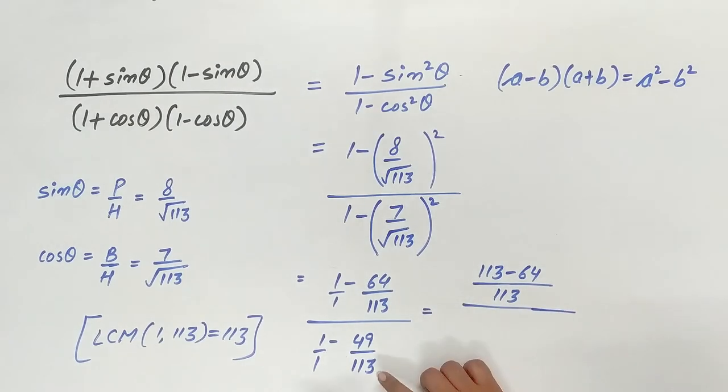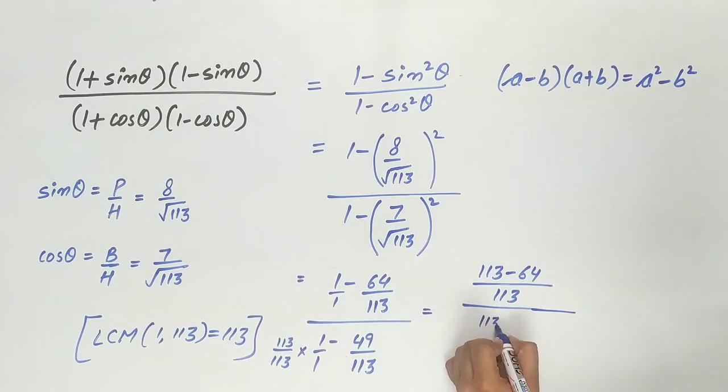Similarly, LCM of 113 and 1 is 113. Multiply and divide 1 by 113. So, 113 minus 49 divided by 113.